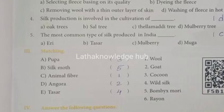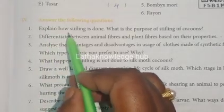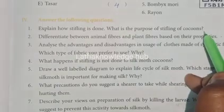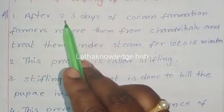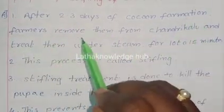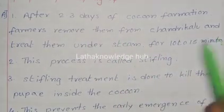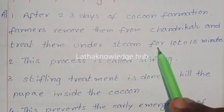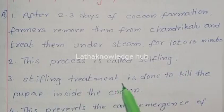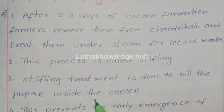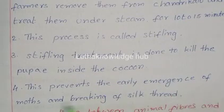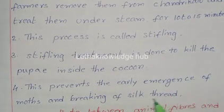Explain how stifling is done and what is its purpose. After two to three days of cocoon formation, farmers remove them from chendrikalu and treat them under steam for 10 to 15 minutes. This process is called stifling. Stifling treatment is done to kill the pupae inside the cocoon. This prevents the early emergence of moths and breaking of silk threads.